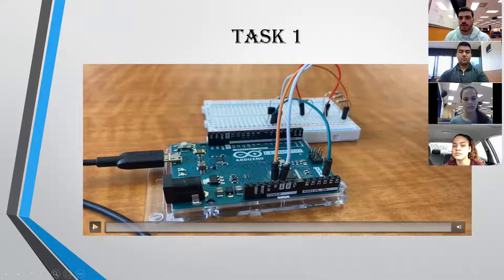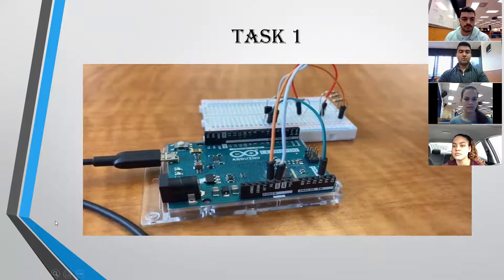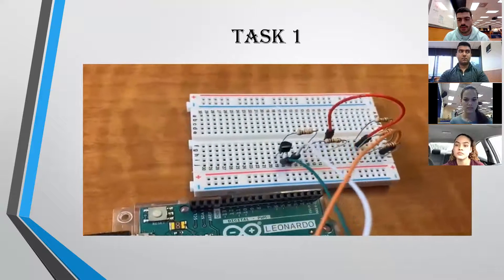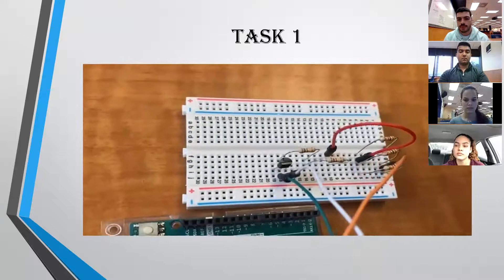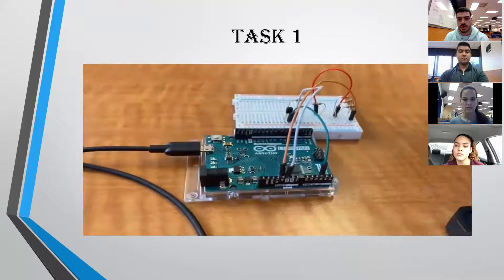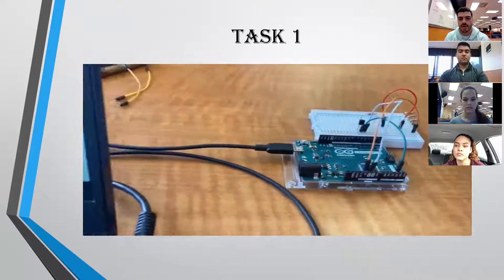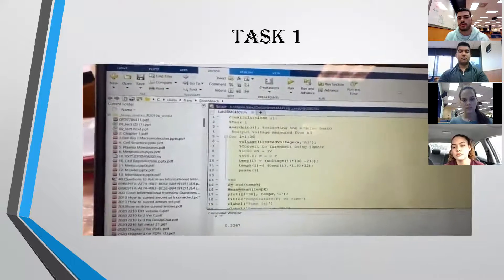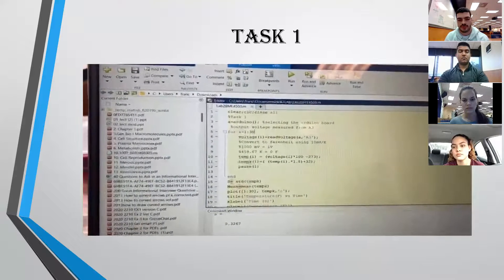I'm going to show the video of task one. This is the whole setup for the circuit. We connected three resistors in parallel, two in series, to get the exact number of ohms that was required: 2.33 kilo-ohms specifically.